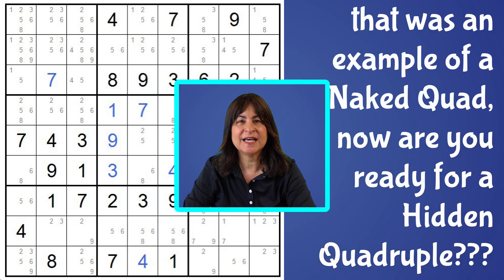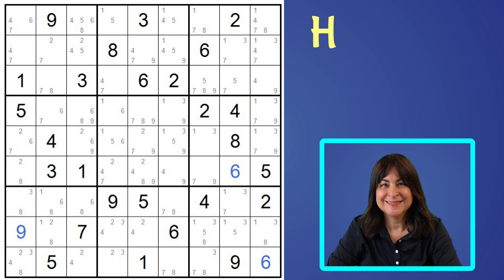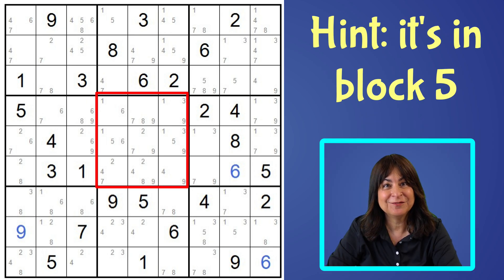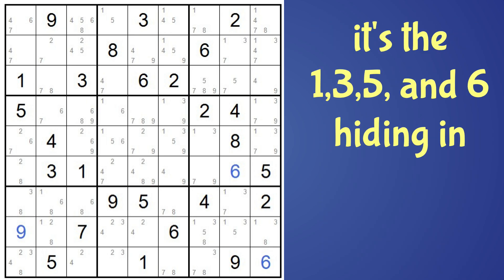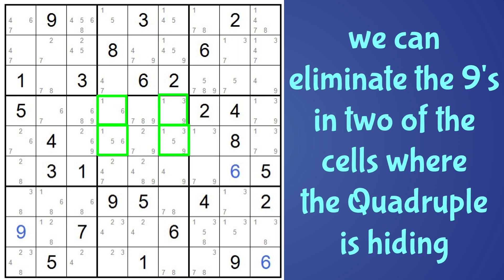So now that we've seen a naked quadruple, are you ready for a hidden quadruple? Here's another example. Can you find the hidden quad? Hint — it's in block five. It's the one, three, five, and six in these four cells. Notice there's a nine in two of these cells, but the one, three, five, and six can only go into those four cells. So we can eliminate those nines.